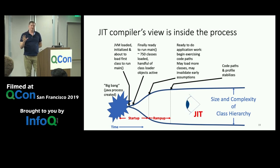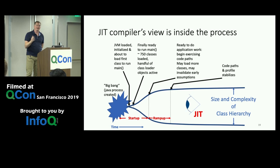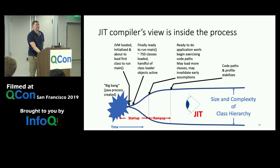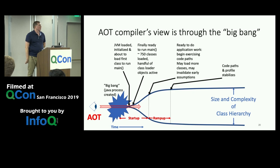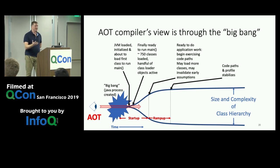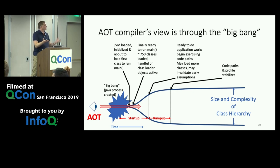The JIT compiler is inside the process the whole time, knowing exactly which classes have been loaded, where they've been loaded, and how they relate — regardless of which class loader loaded them. It can see all of that complexity directly. But the AOT compiler has to view everything through the big bang of the Java process being created. AOT really has to predict all of that complexity — potentially hundreds of class loaders and tens of thousands of classes and their relationships — which is really hard.